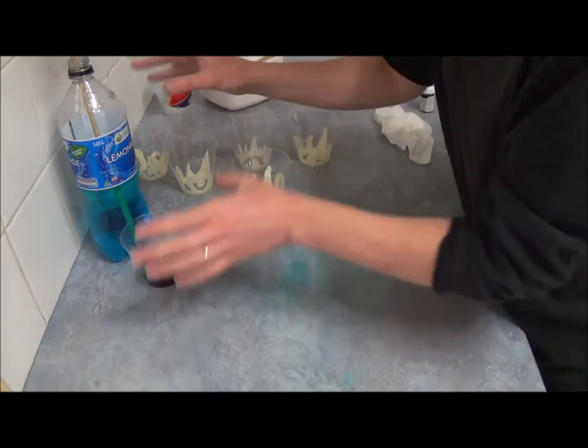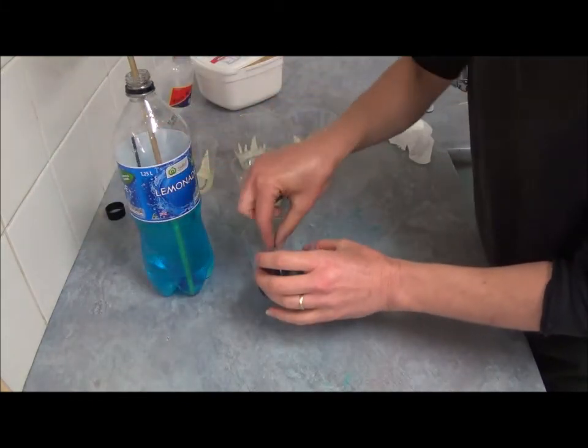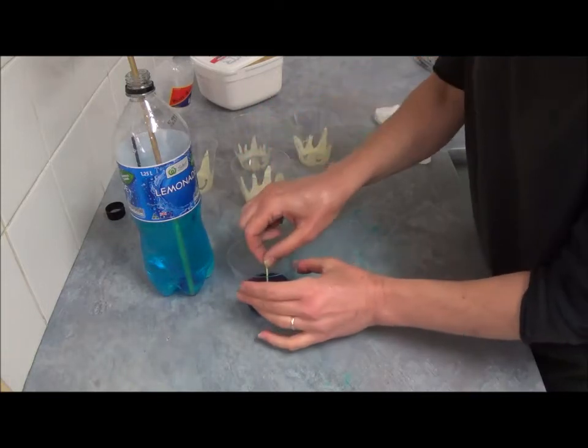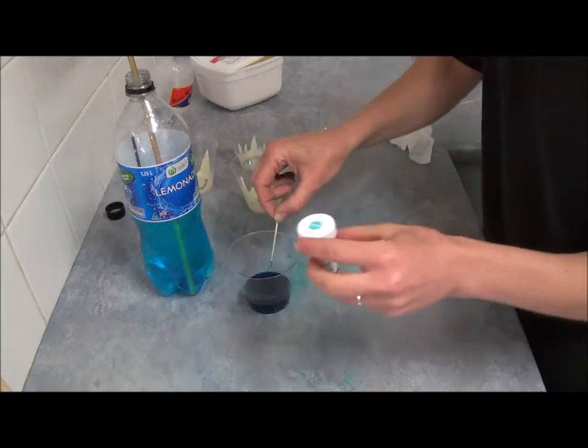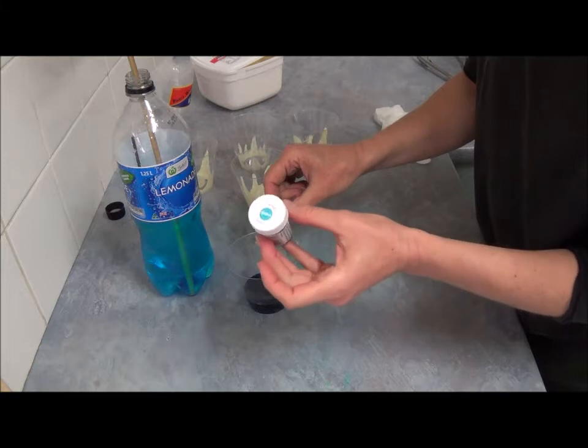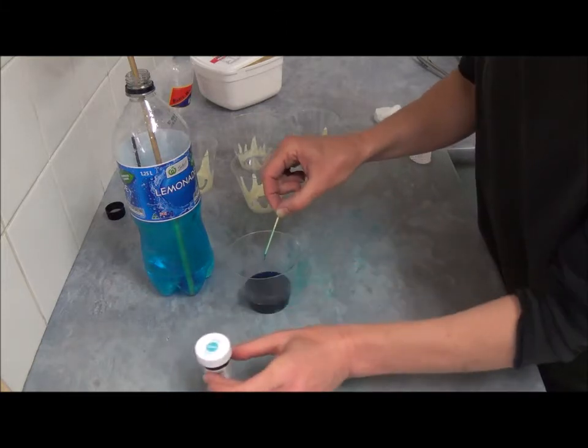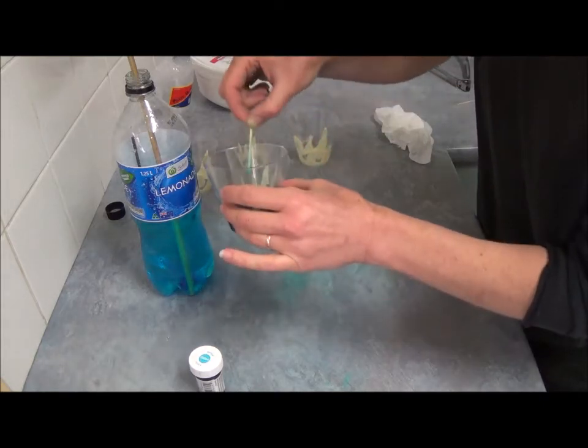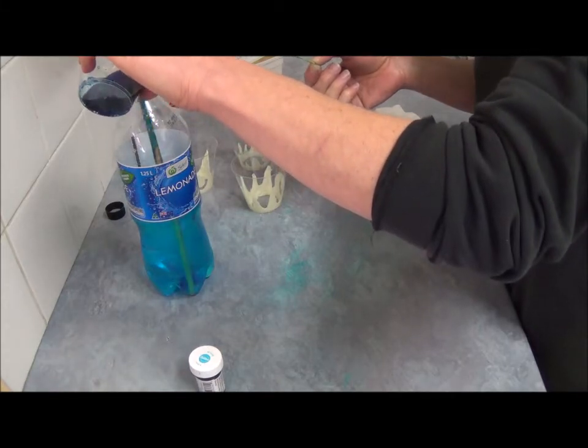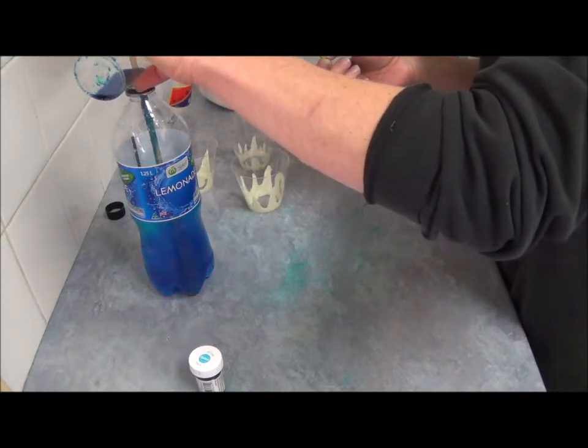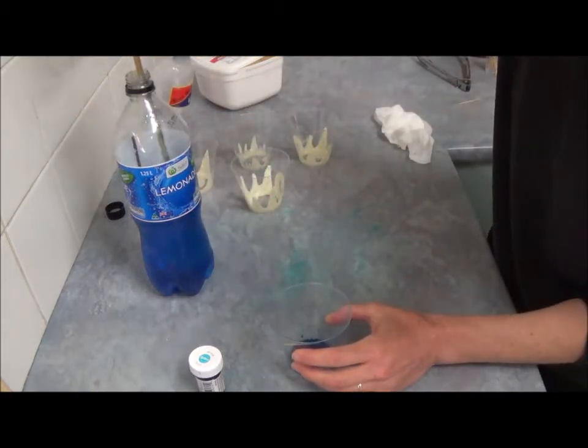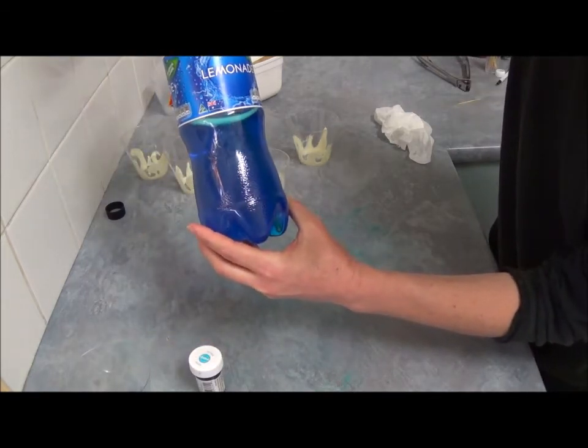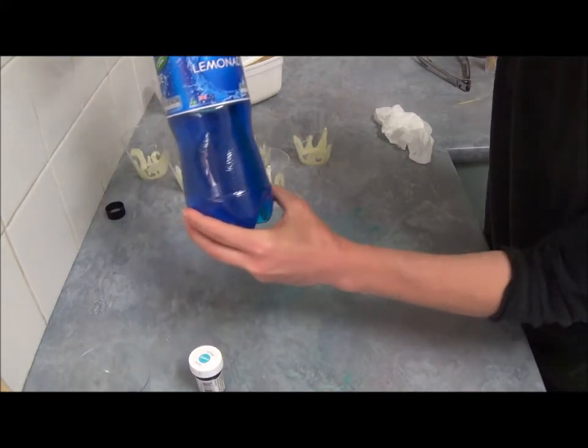Now if you're going to use lemonade, to color it, take a small amount of lemonade into a cup and take sky blue gel food coloring, Wilton or Americolor, doesn't really matter. Add a small amount and mix it together. Then pour it into the lemonade bottle. Add just enough until you see how blue you want it to be. I think it's quite blue enough now.